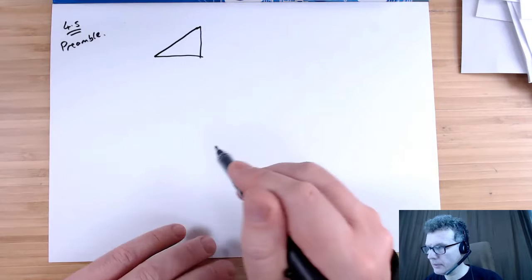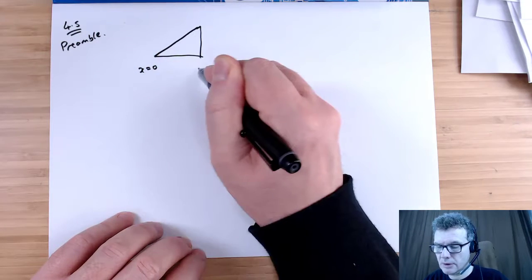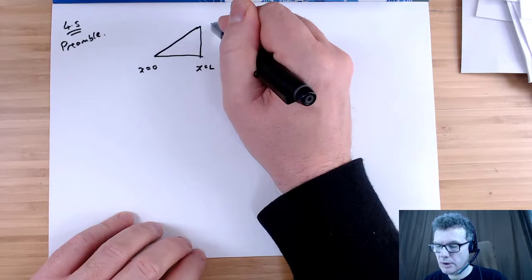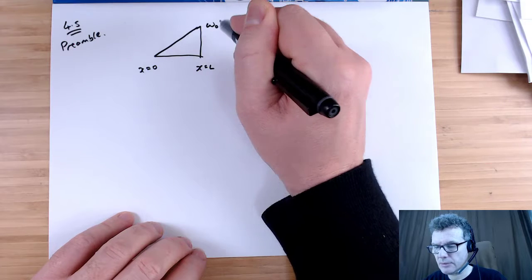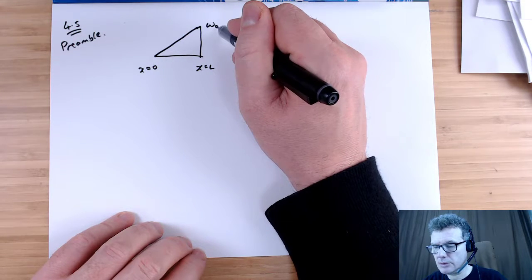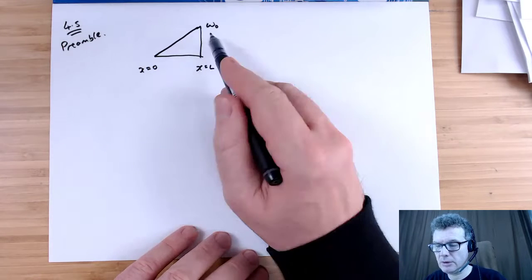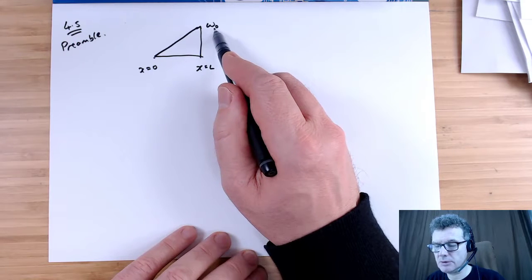If we define x equals 0 here and then x equals L, defining this as a weight, so little w0 at this point here, but w varies from 0 up to little w0 to that point there.